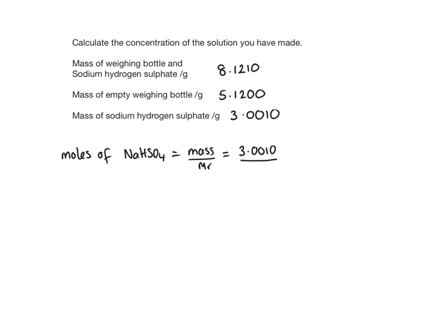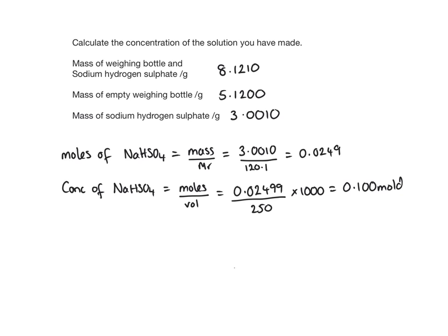Once we've got the moles, it's fairly easy to work out the concentration. We do moles divided by volume. Remember, the volume has to be in dm³, so divide by 1000 again. That gives a concentration of 0.100 mol/dm³, which is what it needs to be.